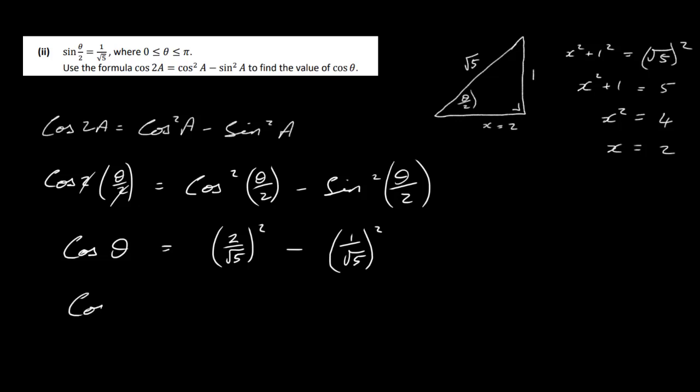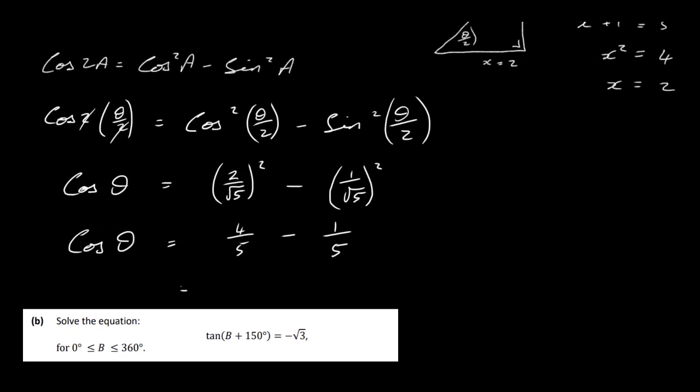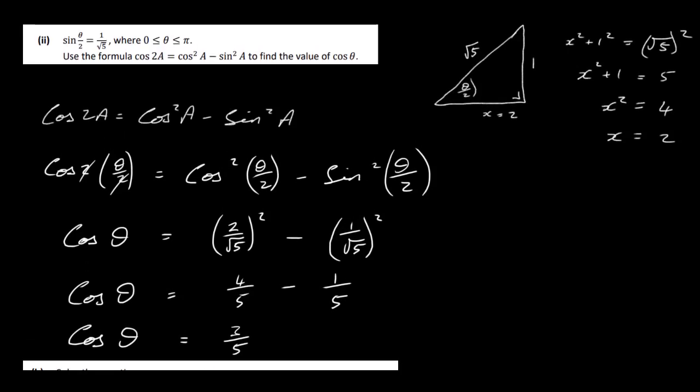So we have cos of theta is going to be 2 twos are 4 over 5 minus 1 over 5, and that will give us the cos of theta, which is what we need, is 4 over 5 minus 1 over 5 is 3 over 5, and that's it. And this is for theta between 0 and pi. If we had have taken negative values up here, we could have gotten other answers, but we just need theta to be between 0 and pi.